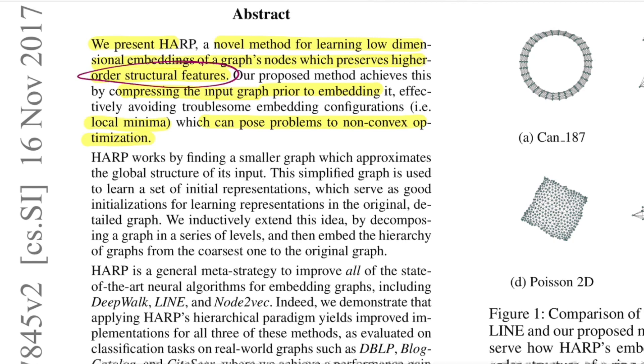Their method compresses the input graph prior to embedding to avoid local minimas which can pose problems for non-convex optimizations. This method, HARP, compresses the input graph by doing merge operations, then applying embedding techniques to learn representations at that level. Since they're working with a less complex graph, the chances for the learning algorithm to get trapped at local minima would be very less compared to converging in a complex loss landscape.